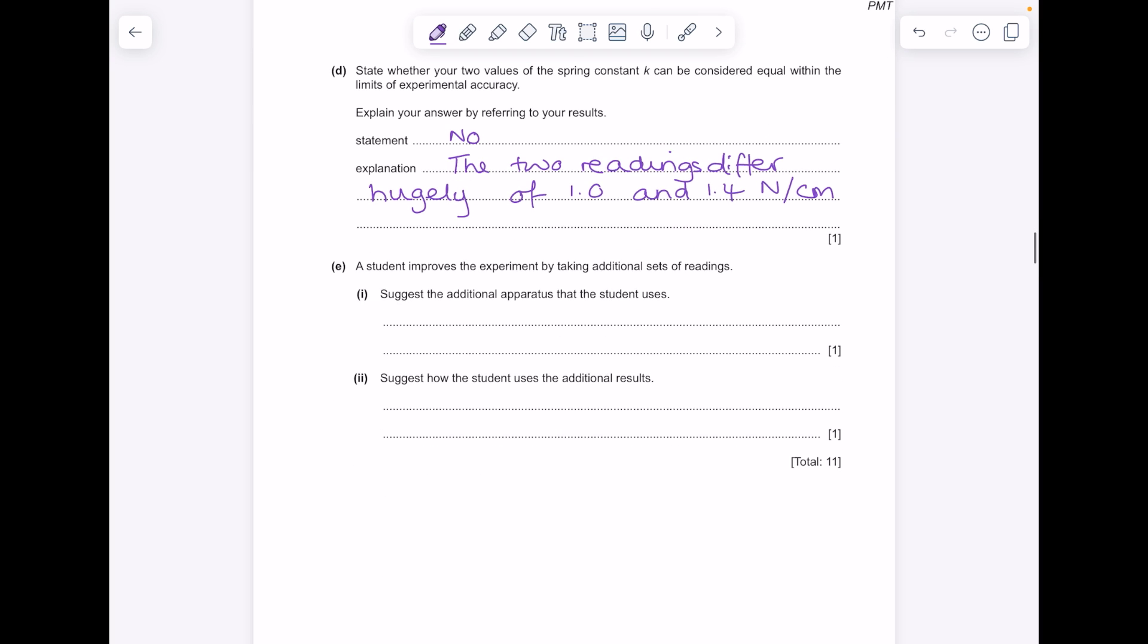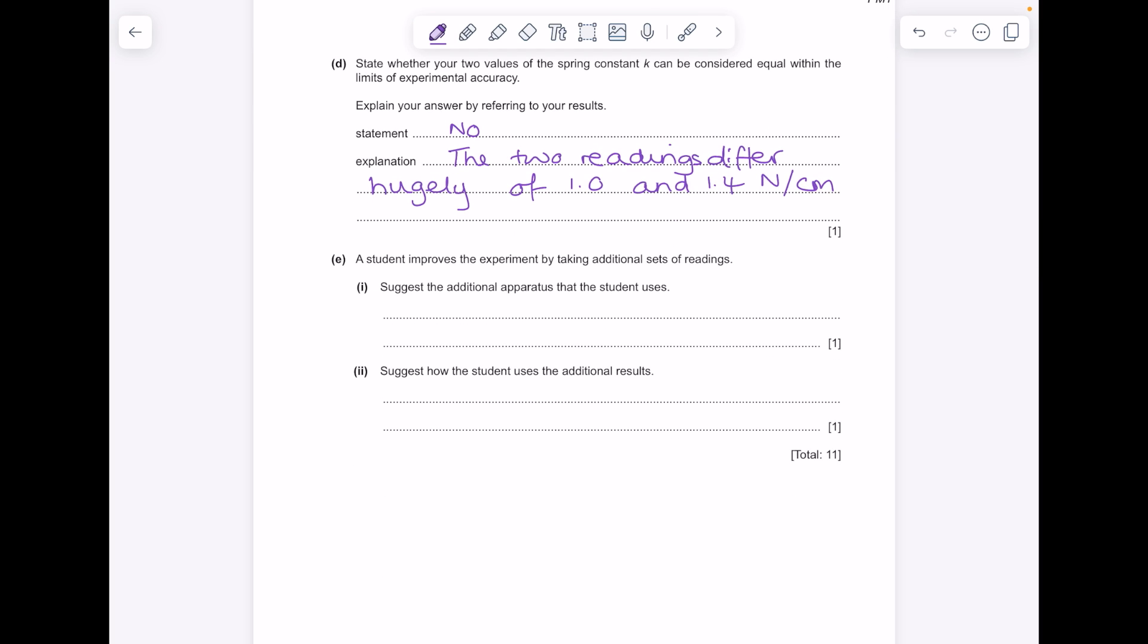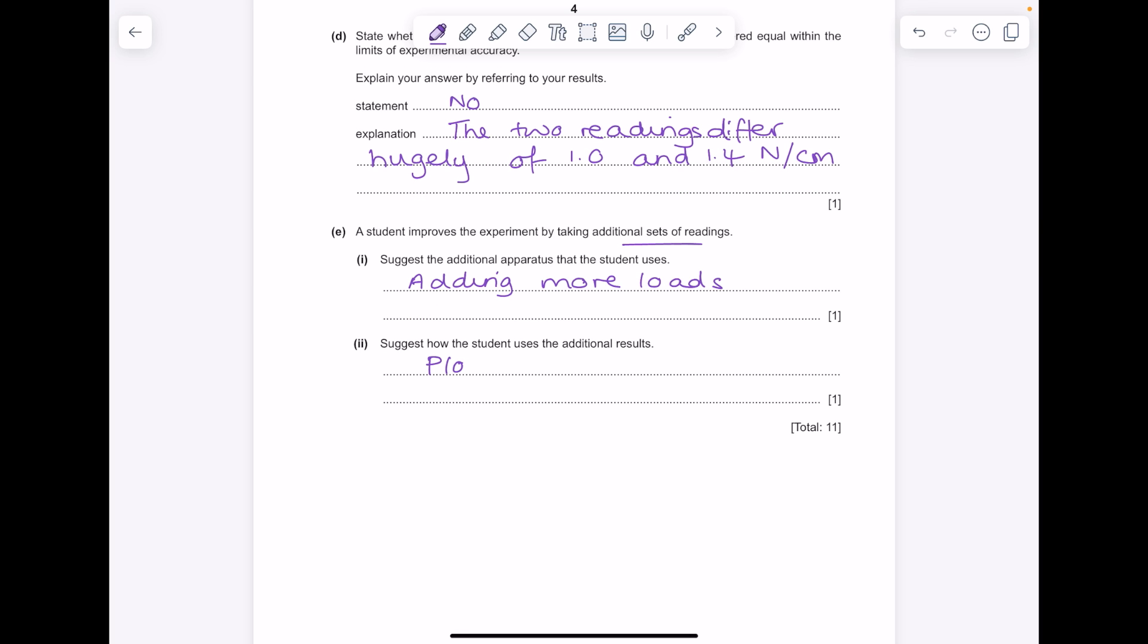The student improves the experiment by taking additional sets of readings. Suggest the additional apparatus that the student uses. The way you'd get additional readings is you need to find new lengths and the only way you can do that is by adding more loads. Suggest how the student uses the additional results—they can plot a graph.